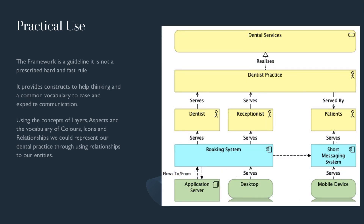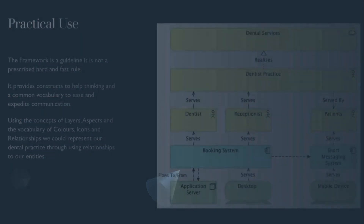Let's see an example. The dental services are realised by a dental practice. The dental practice is served by a dentist and receptionist, and the practice serves patients. The booking system serves staff in managing appointments, and SMS enables patients to receive appointment notifications. The booking system is available through the use of a desktop, and therefore the desktop serves the application. And so our example has used the concepts of layers and aspects to model the dental practice.